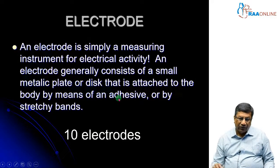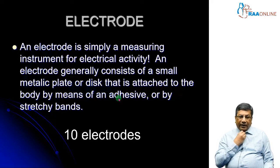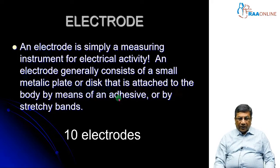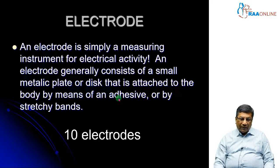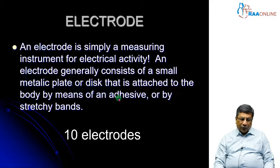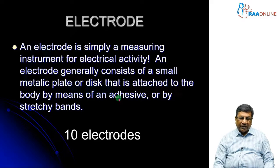Before we go into the leads, you must know the difference between an electrode and a lead. The electrode is a physical object — it is an electrical activity measuring instrument from the patient's body. It is usually a small metallic plate, a chest belt, or a disposable disc, attached to the body either by pasting the disc, putting the chest belt, or putting the metallic plate through stretchy bands on the limbs.